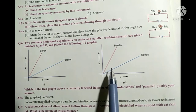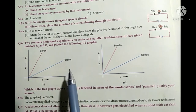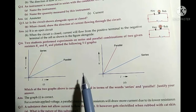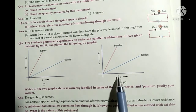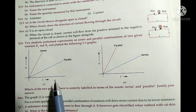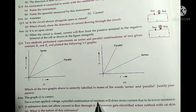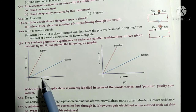Question number six: two students performed experiments on series and parallel combinations of two given resistors R1 and R2 and plotted V-I graphs. Which graph is correctly labeled for series and parallel? For a certain applied voltage, a parallel combination of resistors will draw more current due to its lower resistance.